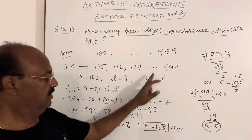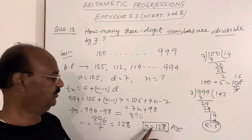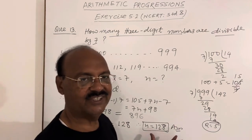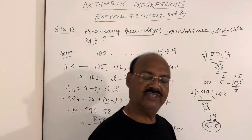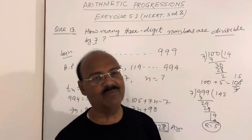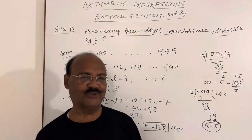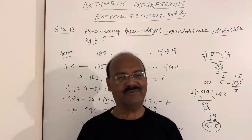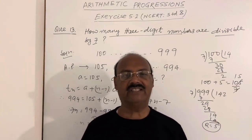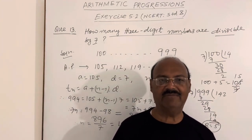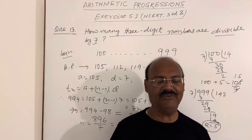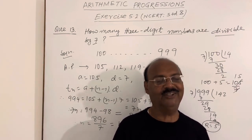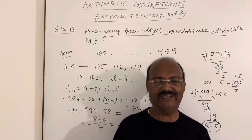This is the answer. Between 100 and 999, there are 128 three-digit numbers which are divisible by 7. So the answer is n equals 128. Hope you have understood it. Students, remain in touch with these videos. We will see more important questions in other videos to come. Hope you have subscribed to this channel. If not, please subscribe immediately and share these videos with your friends. Thank you very much for watching this video. Your likes are most welcome. Thank you very much.